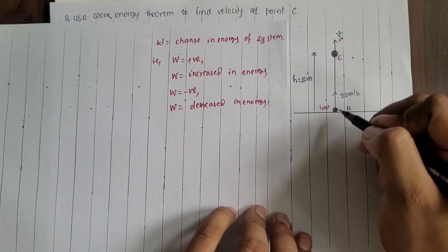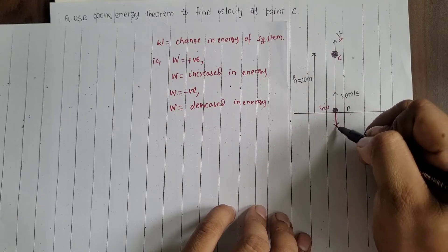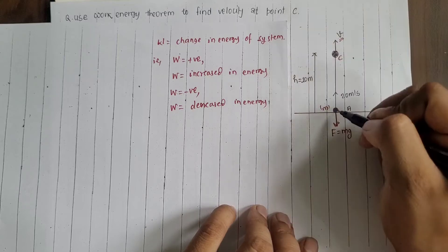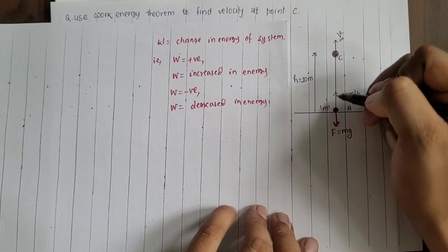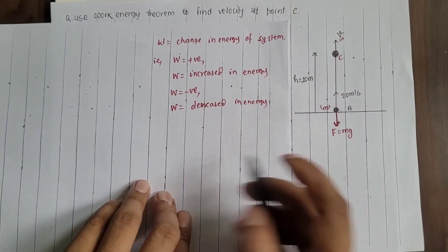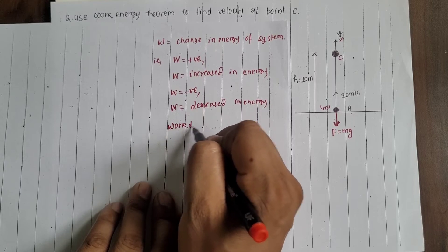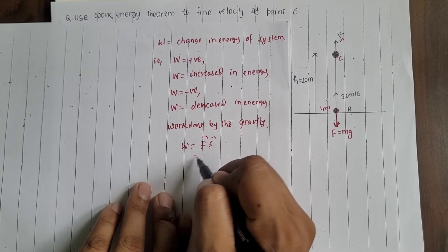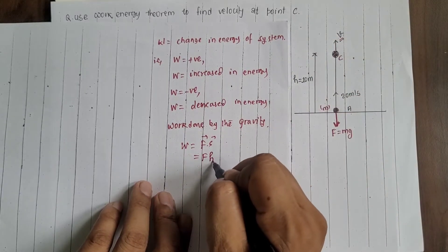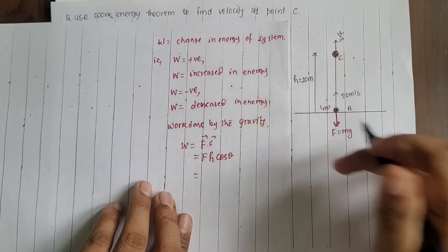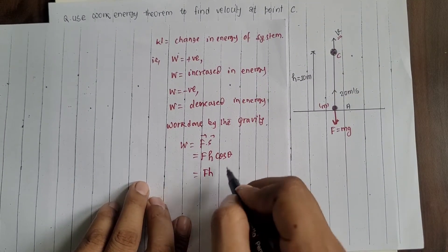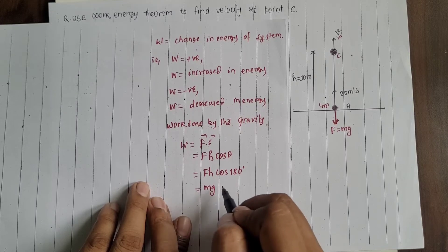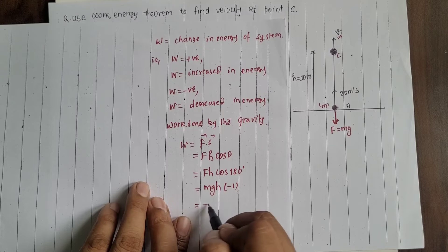In this question, the object has mass m. The force of gravity acting downward on the object is the weight, so F equals mg. The object moves upward, which is the opposite direction to gravity. Since force F and displacement h are in opposite directions, work done by gravity equals F into h into cos 180°, which equals mg into h into (−1), which equals −mgh.